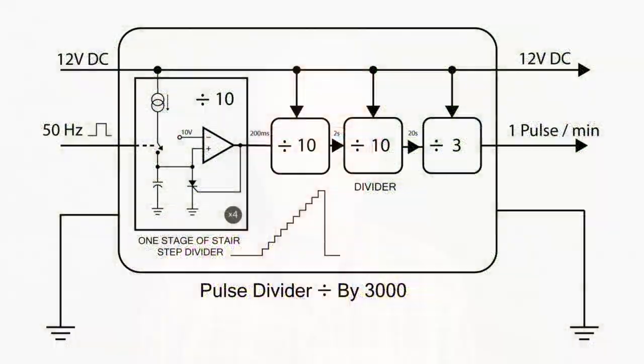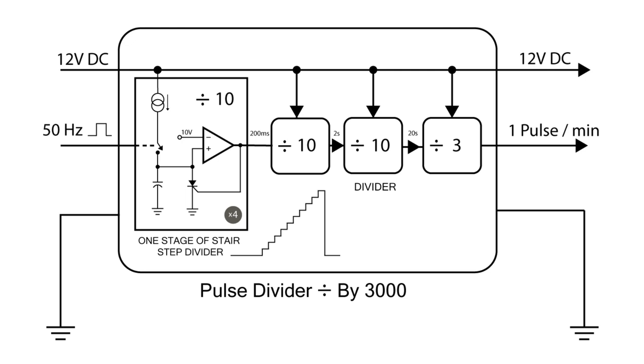It does the job with only 14 transistors. So, how does an analog pulse divider actually work? Well, here we have four stages of a stair step divider cascaded to do the final division. Each stage uses a current source and a switch to charge a capacitor in steps. Each step is one count. It charges up until it reaches a final threshold where it resets and discharges the capacitor starting the cycle all over again.